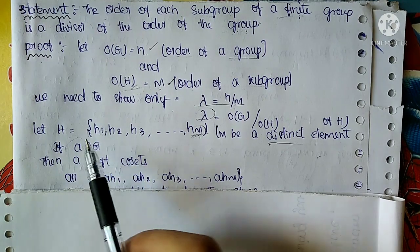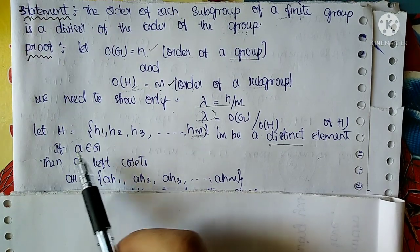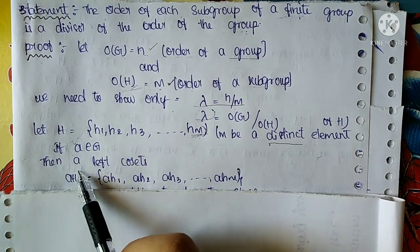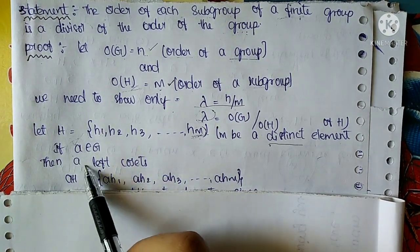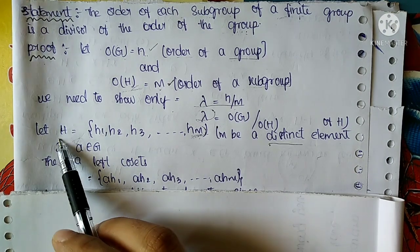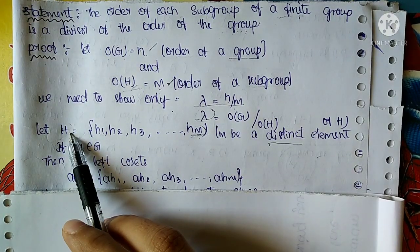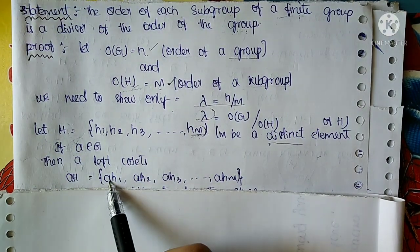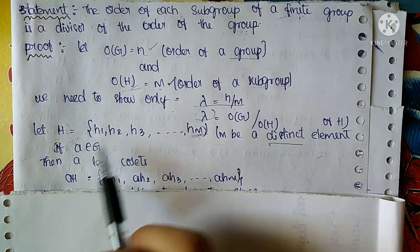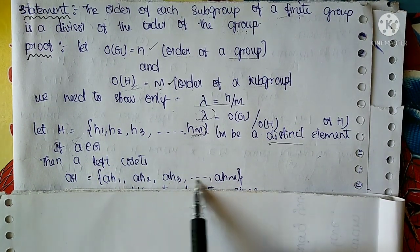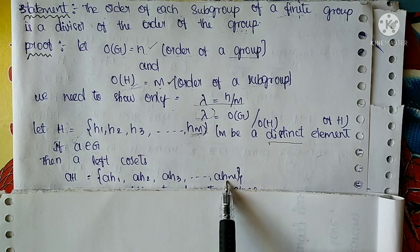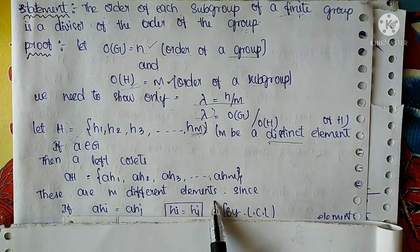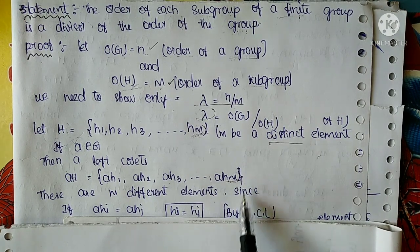If A belongs to G — if A is any element from group G — then we form the left cosets of A with H. The left coset AH is defined as: AH = {A·H1, A·H2, A·H3, ... , A·Hm}. These are m different elements.